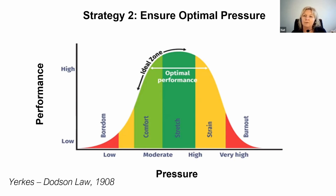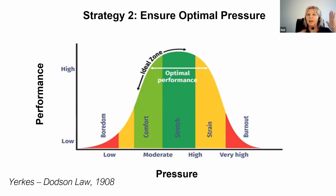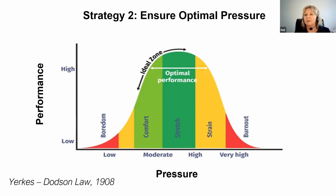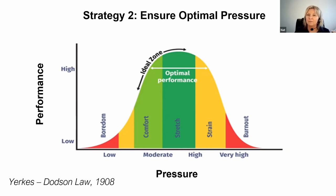There's a certain amount of pressure that will lead to optimal performance. On the different axes we can see pressure and performance — sometimes written as stress or arousal on that axis, and performance on the y-axis. At the bottom left where it says low: no pressure, no activity, no stress, no performance — zero. Every one of us needs a little bit of pressure, a little bit of stress, for our performance to start to go up.